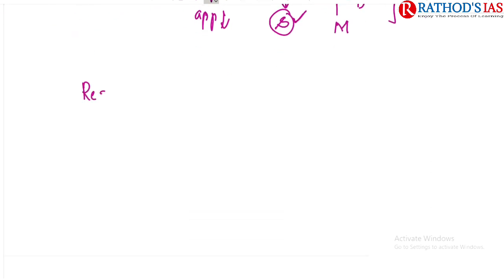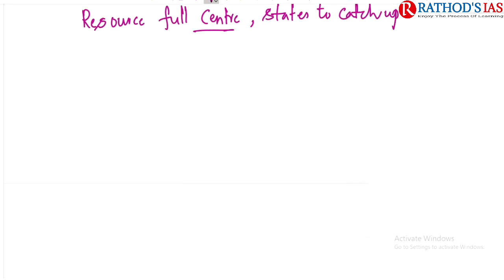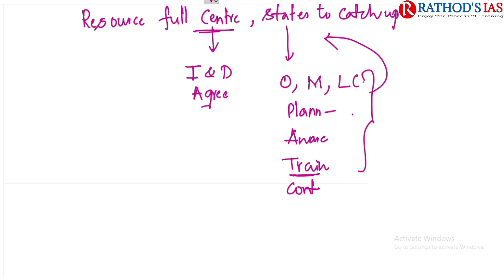Regarding resourceful centers and states: the center goes for international and domestic agreements to ensure medical supplies, while states have duties to organize and manage the logistical chain, plan to identify infrastructure gaps, conduct awareness camps, train manpower, and handle contractual agreements. There is a need for proper coordination between the center and the state to come out of this pandemic.